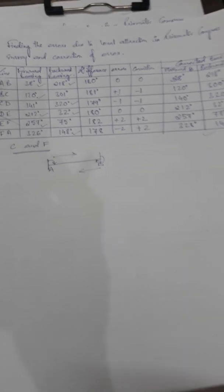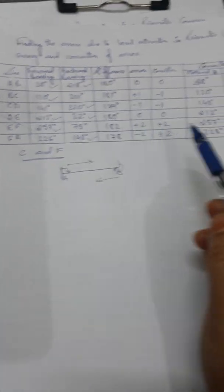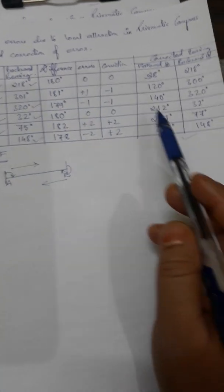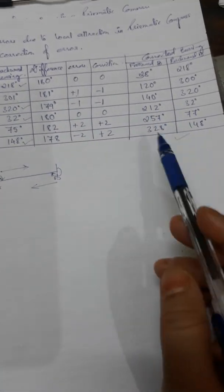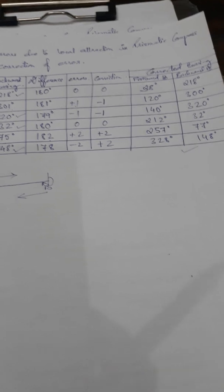So here I have shown you how to correct the bearings while doing the prismatic compass survey, how to find out the points suffering from local attraction, and how to correct the errors happening due to local attraction. Thank you.